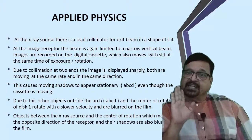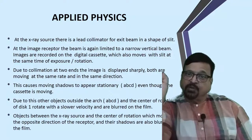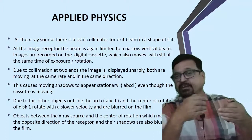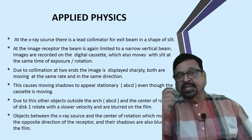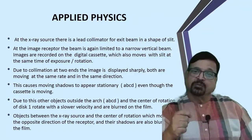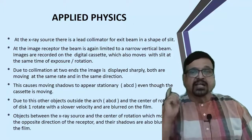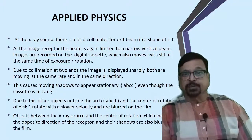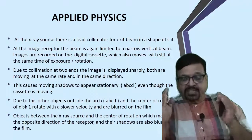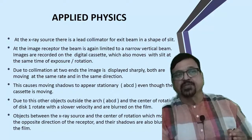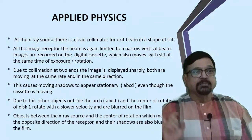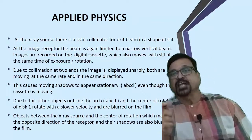At the image receptor there is a collimator, and at the source there is a collimator. The first is a lead collimator at the exit beam, which gives the beam exit in a vertical slit manner. At the receptor there is again a vertical slit. These two vertical slits must be in perfect position so that only the clear, stationary object will be sharply captured while obscured or blurred objects will not be imaged.